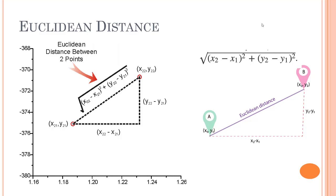Hey everyone, welcome back. In the last video we looked into how the KNN algorithm works and how Euclidean distance is a key step. Finding the Euclidean distance is the key step for the KNN algorithm. So let's get to know a bit more about Euclidean distance, and then we are going to look at the different distance functions that we can apply on our KNN algorithm.